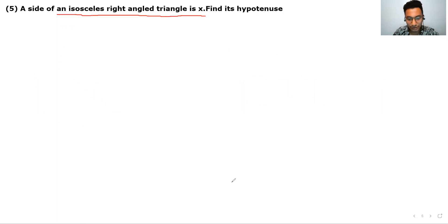Now next question. A side of an isosceles right angle triangle is X. Isosceles triangle is right angle, so you have a right angle triangle drawn. Now you have an isosceles, you have two sides equal to X and X, and you have to find out hypotenuse. Apply: hypotenuse square is equals to X square plus X square. So your answer is 2X square. So if you take root, you get root 2X is equals to hypotenuse.